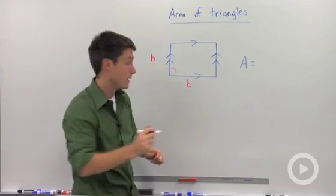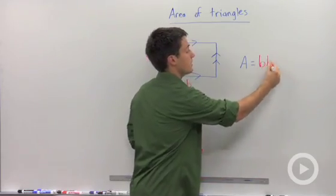So if this is a 90 degree angle, our area is base times height.